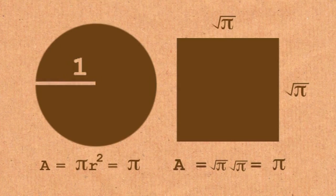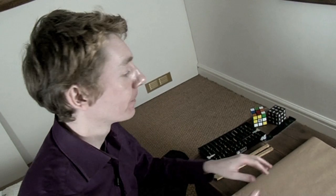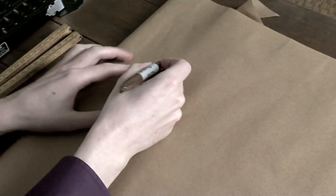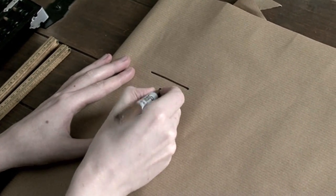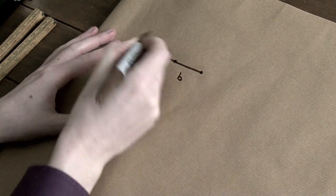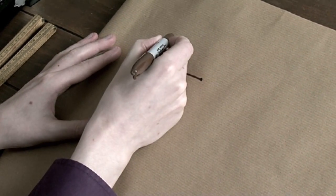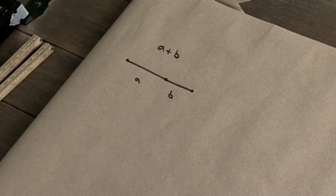Using those rules, can you construct a square with the same area as a circle? Let's have a look at what you can do with rulers and compasses. You can add numbers. Here's a line with length a, then I add another line of length b, and the whole thing is a plus b. So you can add numbers together quite easily with lines.